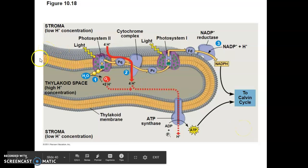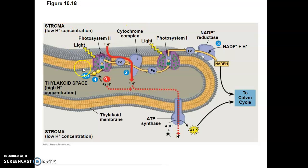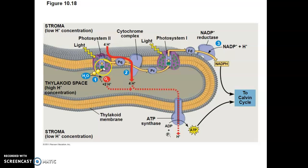Here's our diagram of the light-dependent reactions. This whole thing is the thylakoid — this is the thylakoid membrane, the lipid bilayer. Here's our thylakoid space, the dark gray area, and then the stroma on the outside, that fluid-like substance. What's happening is: light will come in and hit one of the accessory pigments in the light-harvesting complex of photosystem 2, which causes electrons to become excited and jump up to a higher energy state. That excitation passes down through each pigment until the electrons are passed into the chlorophyll A molecules in the reaction center.